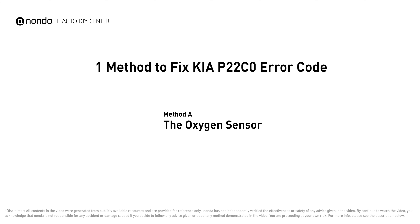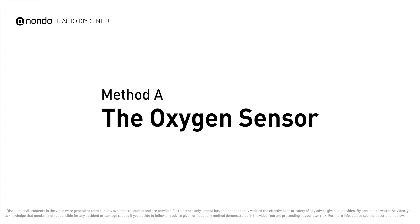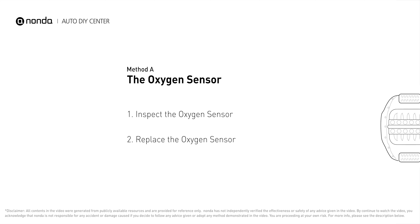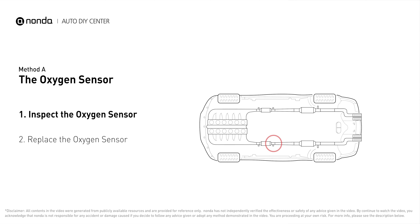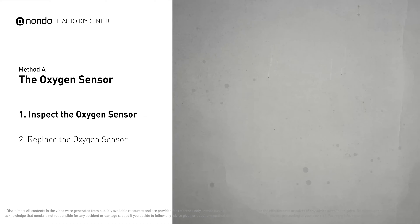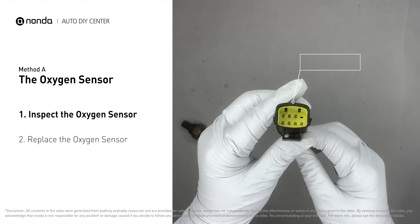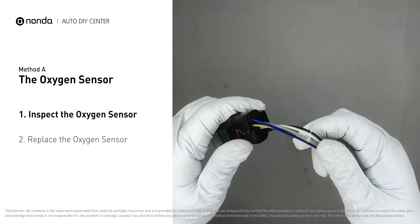Here is one of the most practical solutions to fix Kia's P22C0 error code — Method A: the oxygen sensor. This oxygen sensor is located right after the catalytic converter. Bank two is on the side with cylinder number two; sensor number two is usually the downstream oxygen sensor behind the converter. Visually check the oxygen sensor's electrical connections, wire harness,